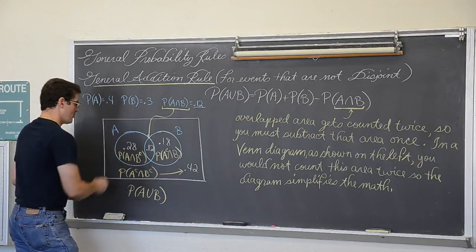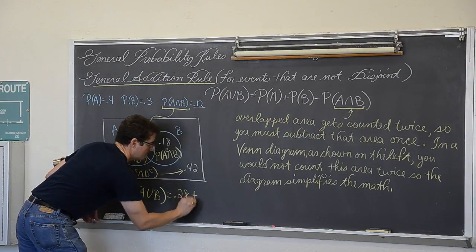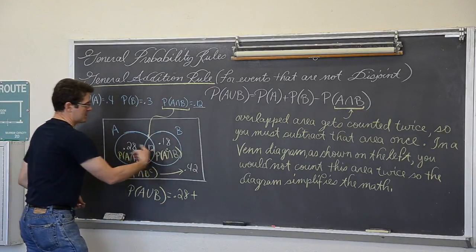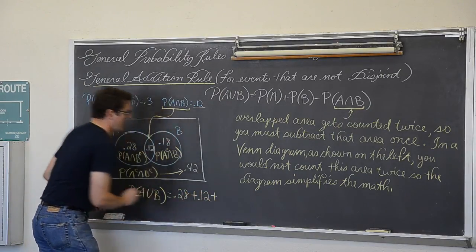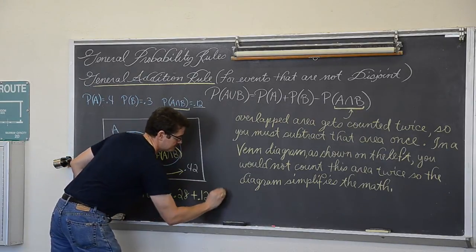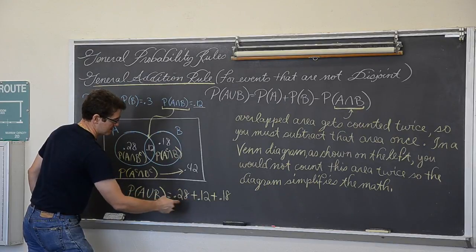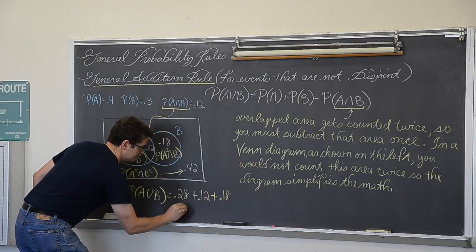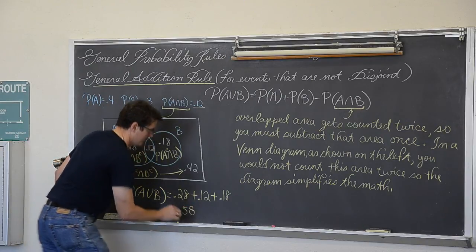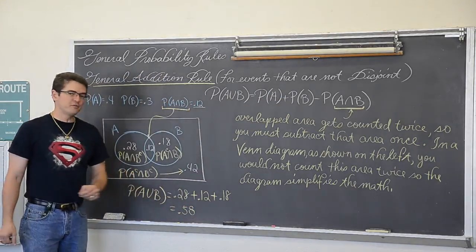So what is the probability of A or B? Well, this would say without the Venn diagram, 0.4 plus 0.3 minus 0.12, or with the Venn diagram set up, we just count all the areas that are either in A or B. Well, that is 0.28 plus, and I am just working my way across the Venn diagram, 0.12 plus 0.18. And that comes out to 28, I know I just did this a second ago, but 28, 30, 40, 58 percent.